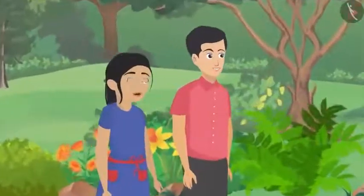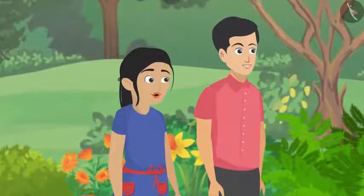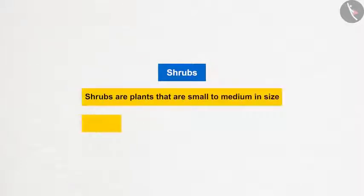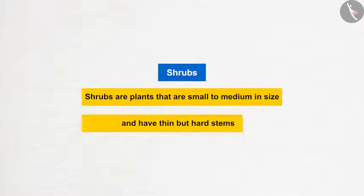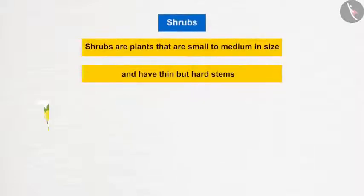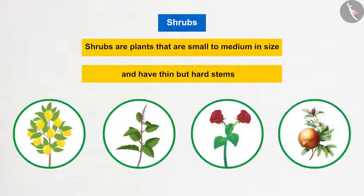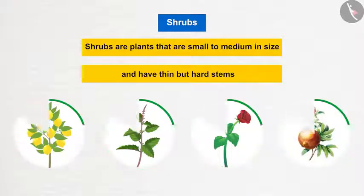Pushpa explains shrubs: these plants are small to medium in size with thin but hard stems, and their branches originate from near the ground. Lemon, basil, rose, and pomegranate are some examples of shrubs.